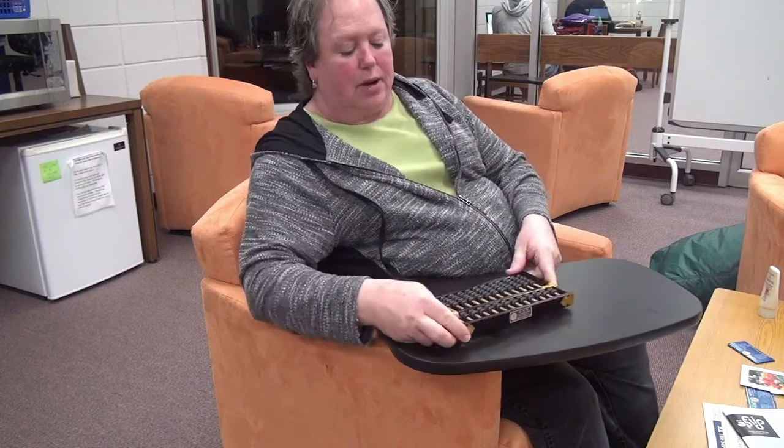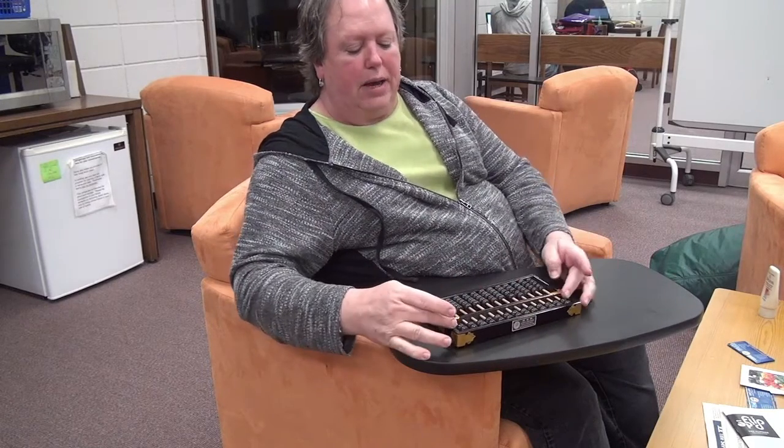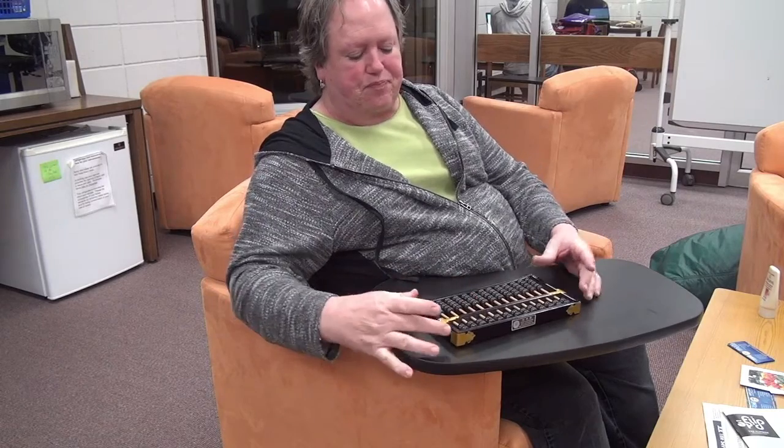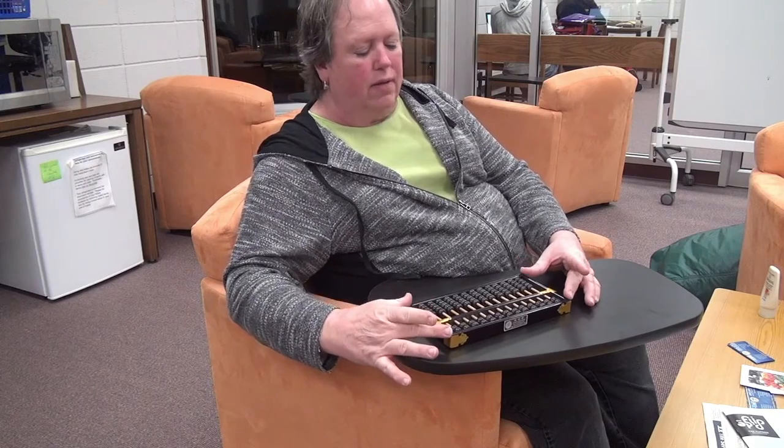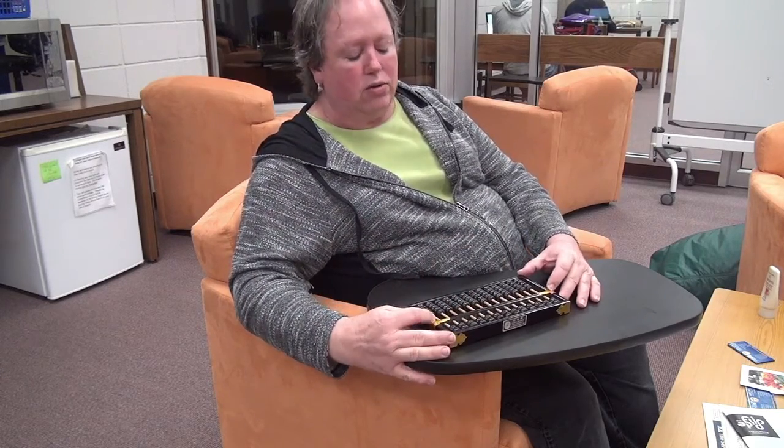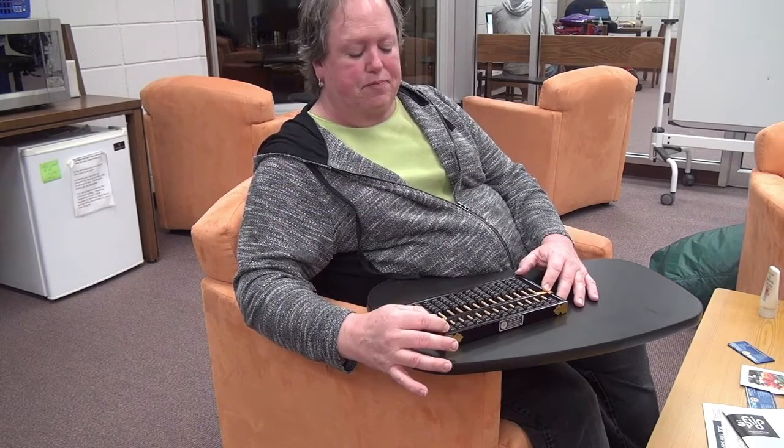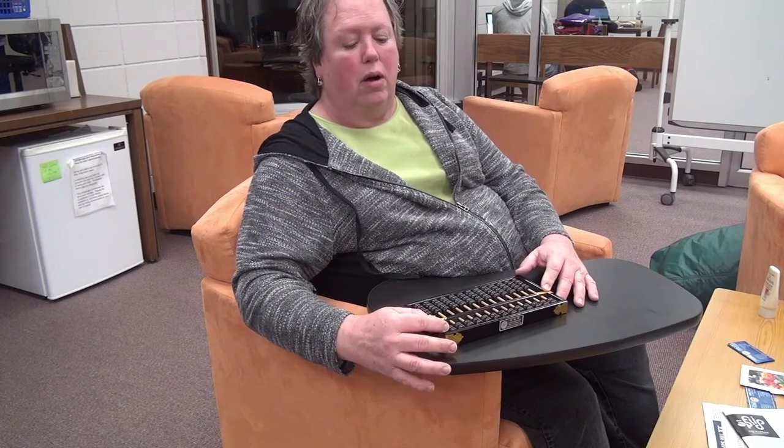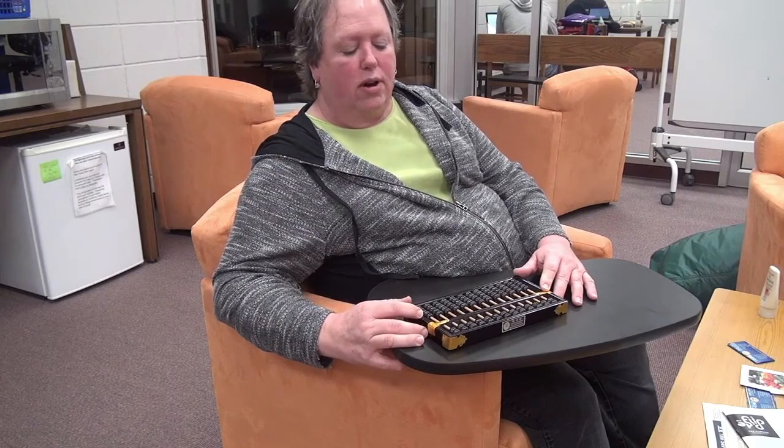So this is a Chinese abacus. It has beads on the top and beads on the bottom. This is a counting frame or an abacus. It's got a top and bottom beam, two side beams, and this middle beam, which is where we do our counting. These beads on the top are called heaven beads or heavenly beads, and these on the bottom are called earthly beads.